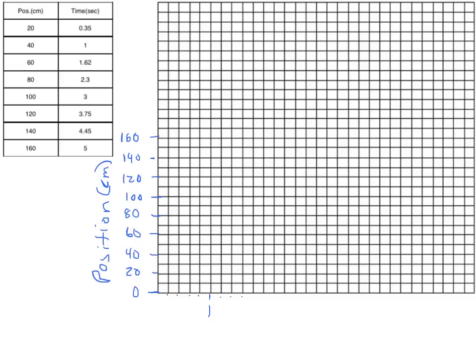Continuing: 1.2, 1.4, 1.6, 1.8, and 2.0, and so we continue all the way across the graph until we reach the maximum range for our x-variable, ending at 4.2, 4.4, 4.6, 4.8, and five seconds. We label the x-axis as time, measured in seconds. Now we have a graph set up to plot position versus time.